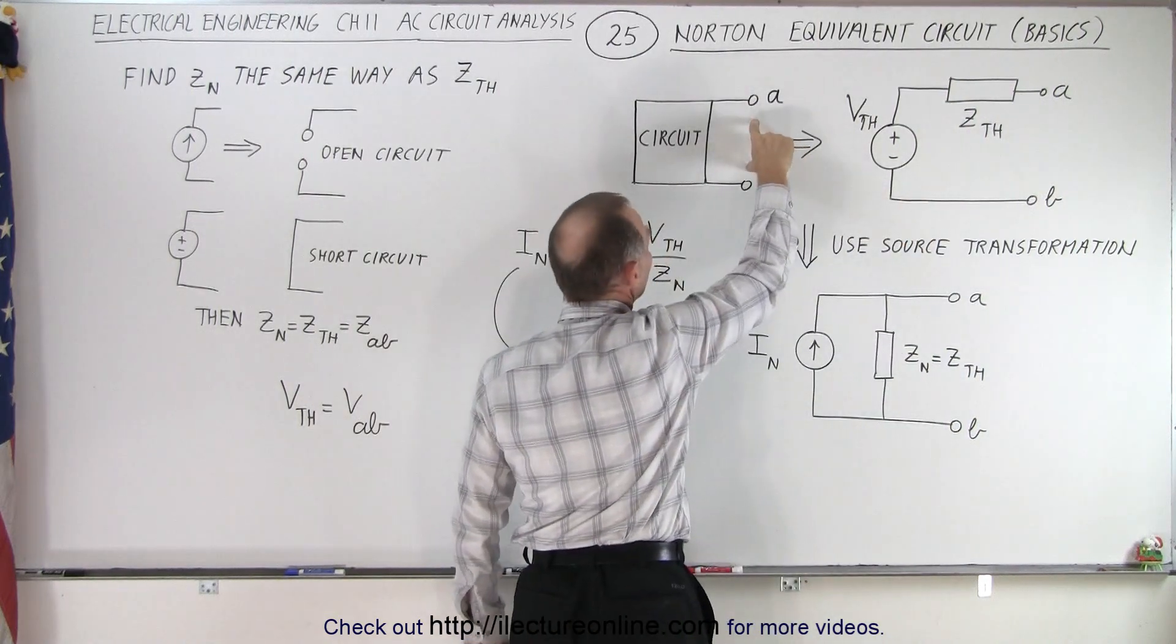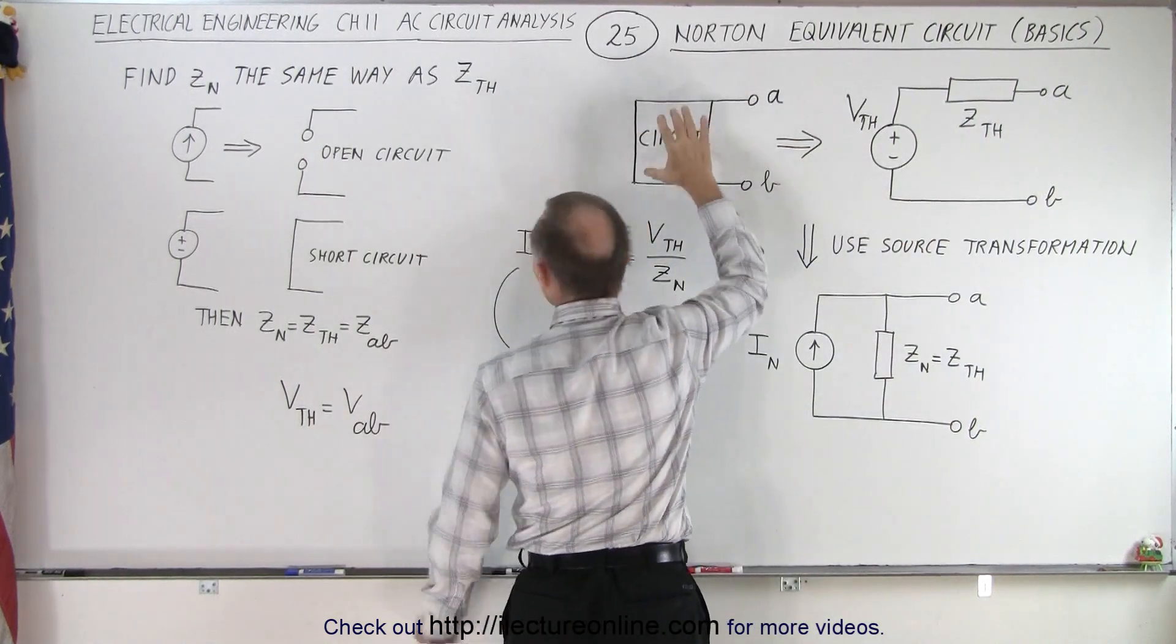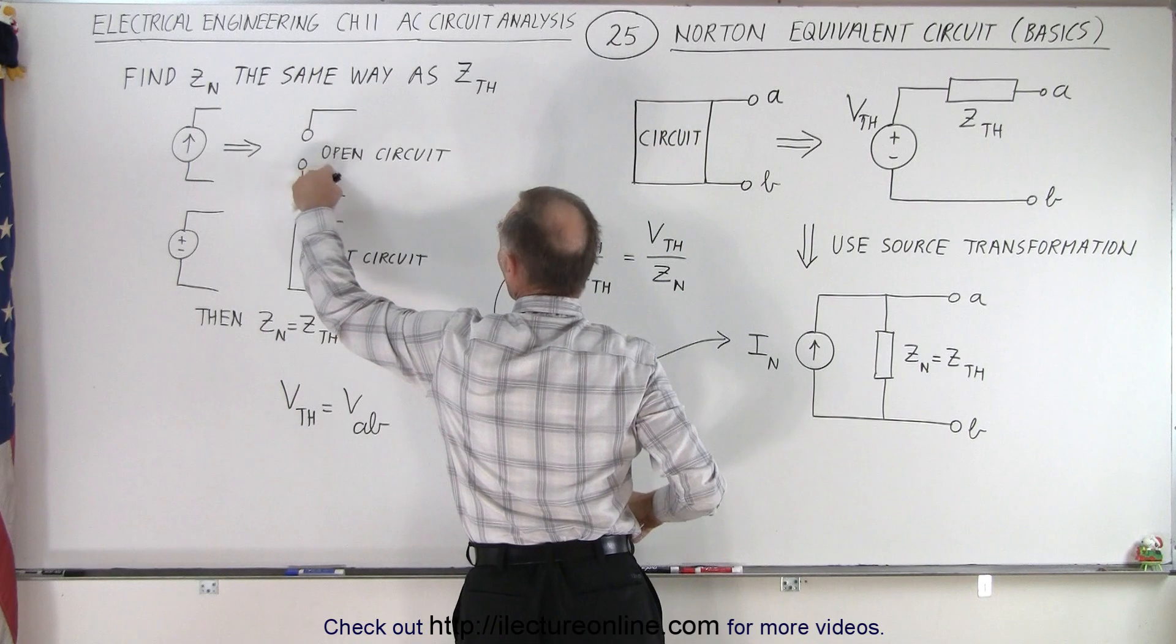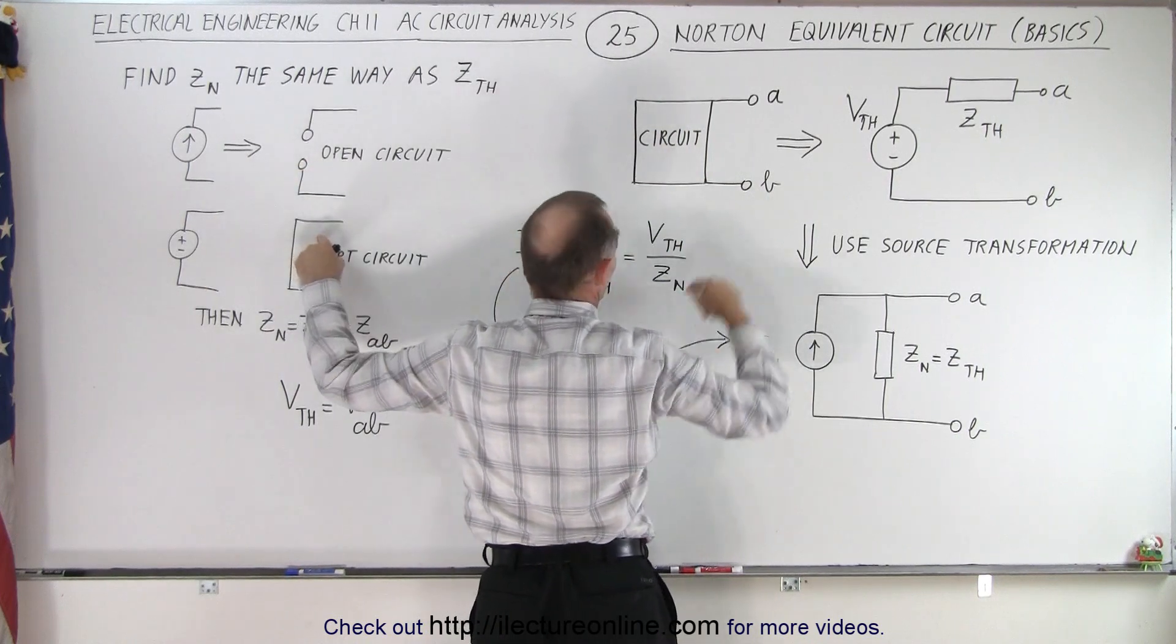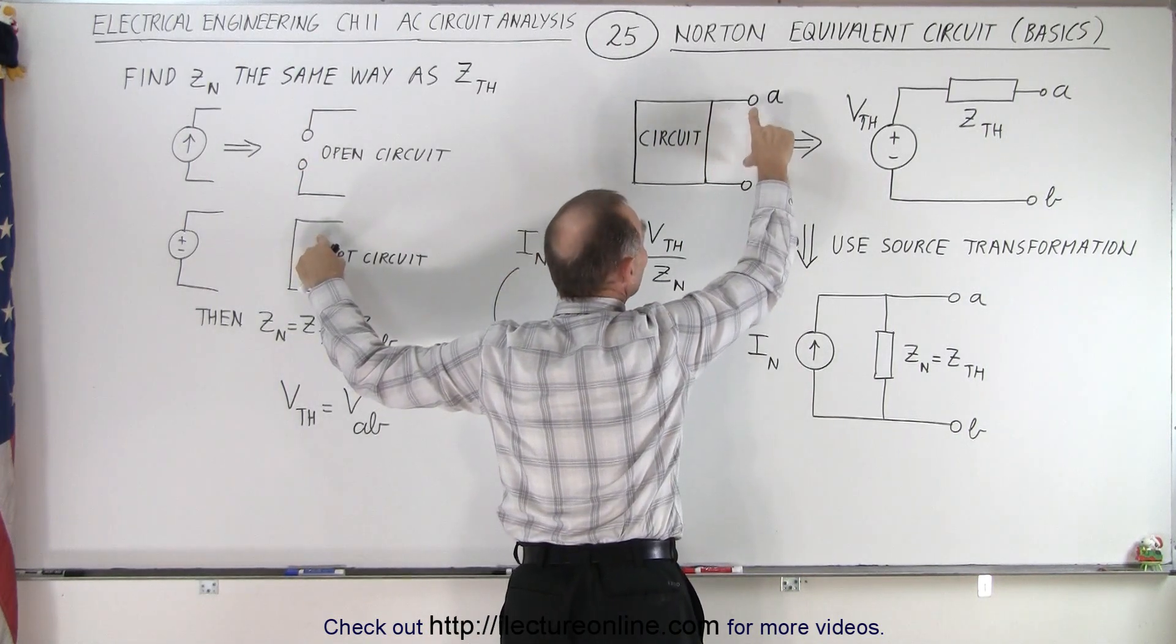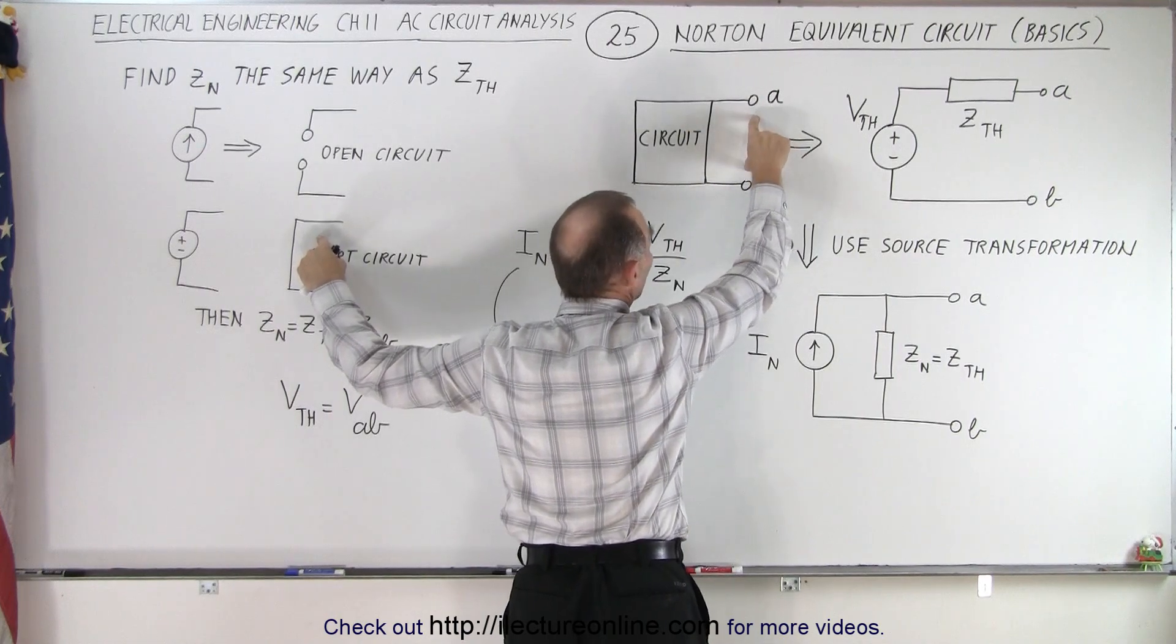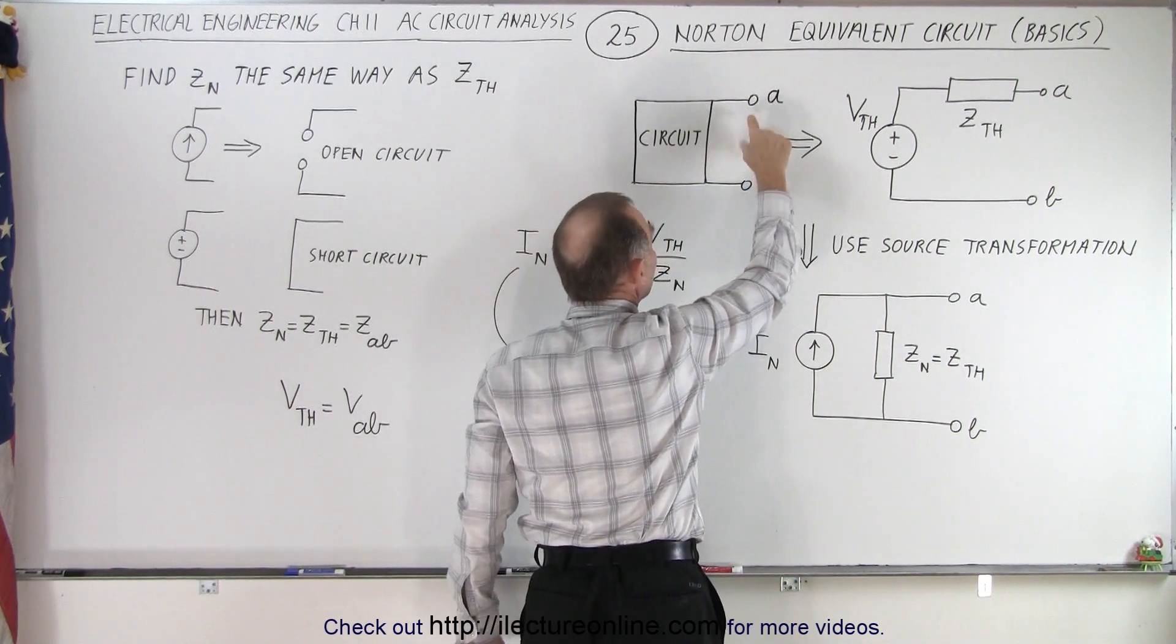So once you've done that to the circuit, you've changed every current source to an open circuit and every voltage source to a short circuit, you then calculate the impedance between the terminals A and B with, of course, no load connected to A and B.